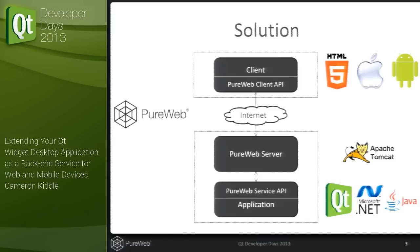We offer a solution called PureWeb, and there are three different components to it. At one layer, we have the PureWeb service APIs that integrate with your application. We have APIs in C++, which supports Qt, as well as .NET and Java. This allows you to extend your application, expose different views and functionality to clients, and map input from clients back into your application. On the client side, you write thin clients using one of our client APIs — we have HTML5, iOS, and Android APIs, and we're also looking into a Qt Quick API so you could have front-end and back-end development all on Qt.